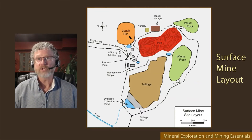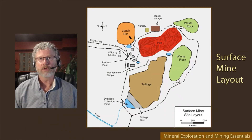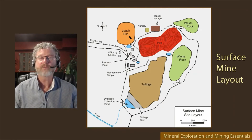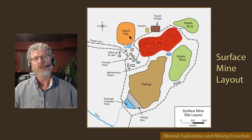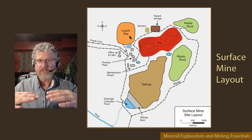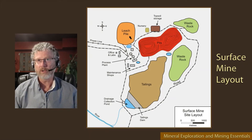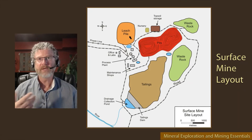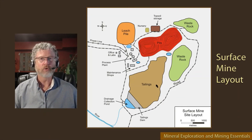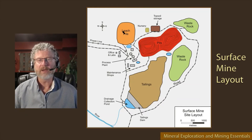Oxide ore is ore in which the minerals have oxidized. For example, gold is often trapped in the sulfide mineral pyrite, but when that ore is exposed to the surface and the pyrite oxidizes and breaks down, the gold is liberated. You can then put the oxide ore on your leach pad, percolate a cyanide solution down through it to dissolve and recover the gold. In a mine like that you may have no tailings at all, since there's no grinding — just leach pads, which would then be reclaimed in place.